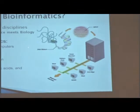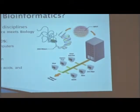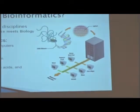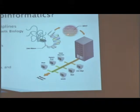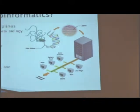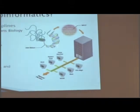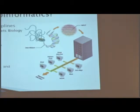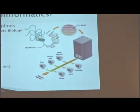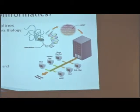For example, a scientist can sequence an organism's genome and that can be stored into computers. With computational tools, it can be manipulated and used for comparison, finding patterns, or identifying certain types of genes within the genome.